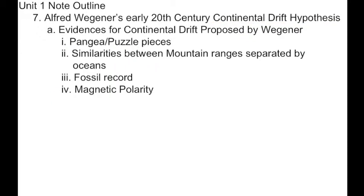Alfred Wegener — world traveler, meteorologist, first person to take polar ice samples in Greenland — came up with the continental drift hypothesis. The idea of Pangea: the Earth looks like it used to fit together, like pieces of a puzzle with edges that match up. Mountain ranges correspond to each other across continents. The fossil record corresponds to the continental drift hypothesis. The magnetic pole of the Earth also makes sense when taking continental drift into account.